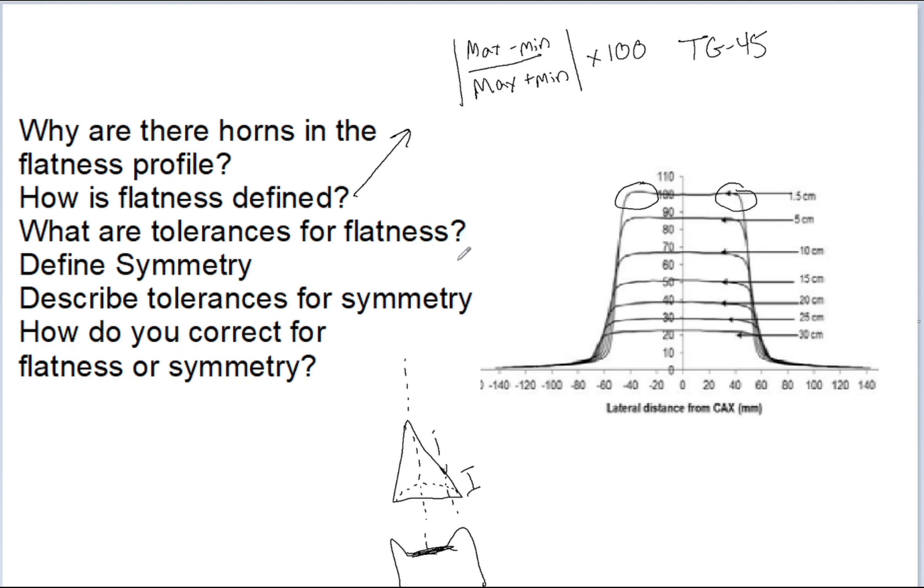Symmetry is defined as the degree of similarity between the isodose curves on one side of the central axis compared to the other side of the central axis. This is also defined over 80% field size at a depth of 10 cm. And typically, just like the flatness, this can be determined different ways.